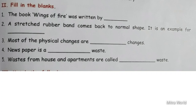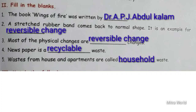Fourth: Newspaper is a blank waste. Newspaper can be recycled, so newspaper is a recyclable waste. Fifth: Waste from houses and apartments are called blank waste. Very good children — household waste. Waste from houses and apartments are called household waste. Now check your answers.